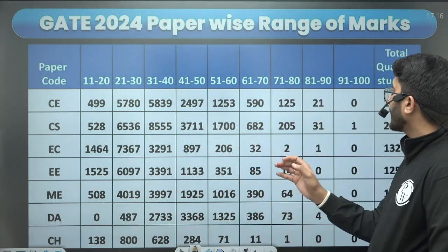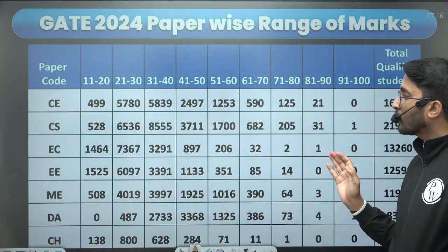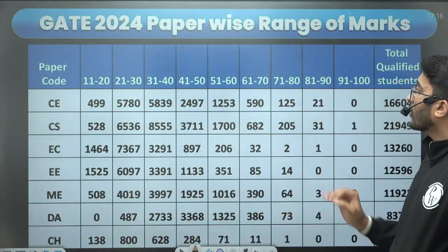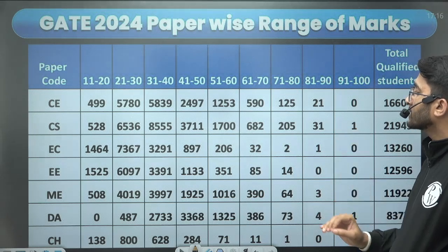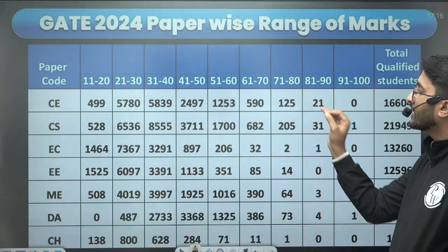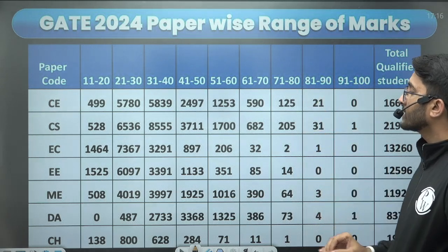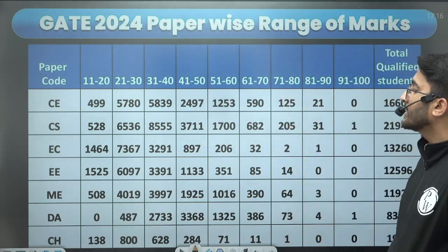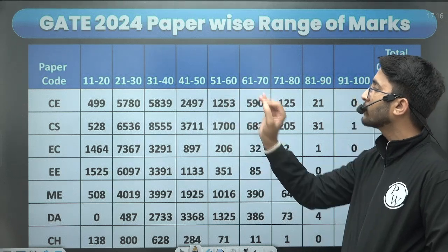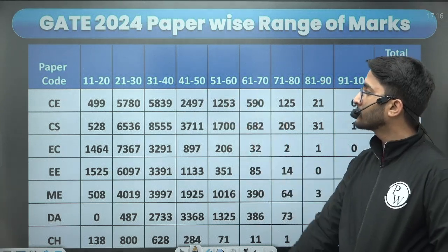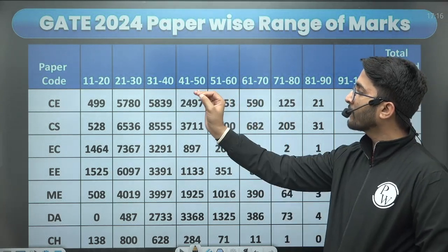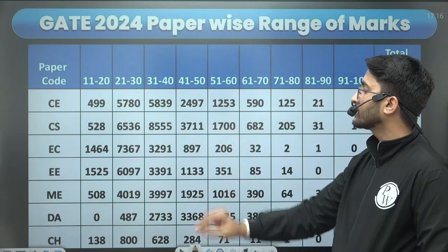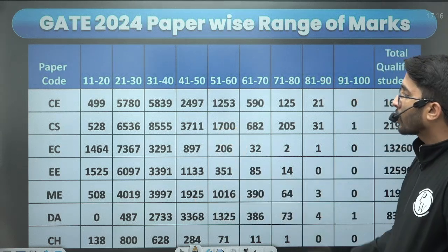For CS, between 91 to 100, one student is there, and from 81 to 90, 31 students are there. From 71 to 80, 205 students are there; from 61 to 70, 682 students; from 51 to 60, 1700 students; and from 41 to 50, 3711 students are there.